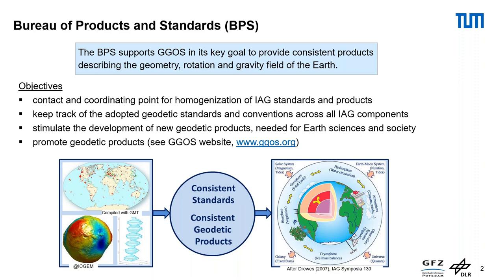The work of the BPS can be divided into four major objectives, which are listed here. The figure illustrates the integration of the three pillars — geometry, gravity field, and Earth rotation — to generate consistent geodetic products as a fundamental basis for studying the Earth system and the interactions between its subcomponents. The prerequisite for this is the application of consistent standards.